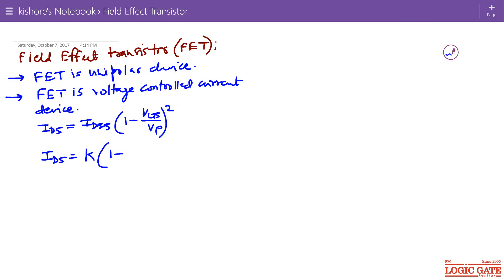In these two expressions, VGS is input voltage or gate to source voltage and IDS drain to source current is the output current. So this current is controlled by input voltage, hence the FET is called voltage controlled current source or current device.